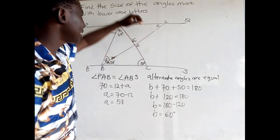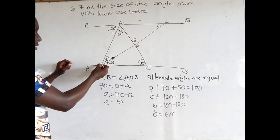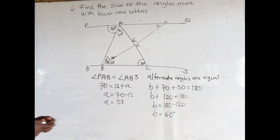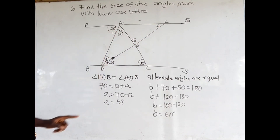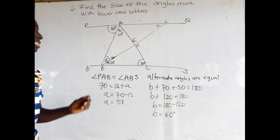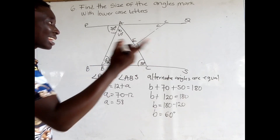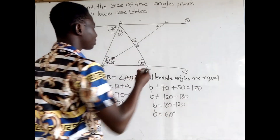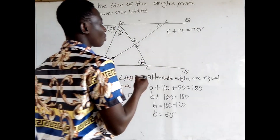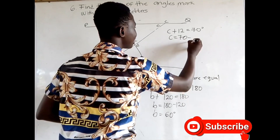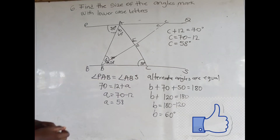Moving on to find c: looking at where c is, we can see there is a triangle formed here. We have two interior sides and one exterior side. Using the property of a triangle that states the sum of two opposite interior angles equals one exterior angle: c plus 12 should be equal to 70. So c plus 12 is equal to 70 degrees, giving c is equal to 70 minus 12, so c is equal to 58 degrees.